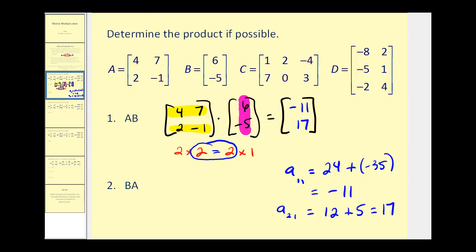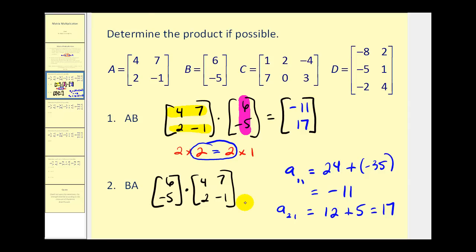Let's take a look at number two: matrix B times matrix A. So we're changing the order of the multiplication. We always have to check to see if it's even possible. This is a two by one matrix and this is a two by two matrix. The number of columns in the first matrix does not match the number of rows in the second matrix. Therefore we cannot find this product and we can say that this product is undefined.